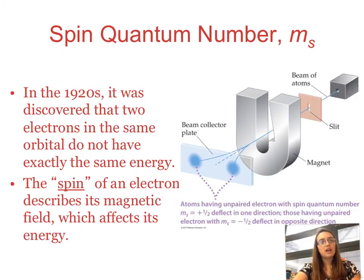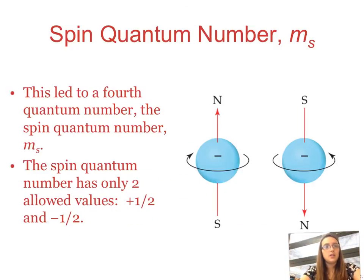So it was discovered that two electrons in the same orbital do not have exactly the same energy. So even though you have two electrons in the 2s, those two electrons have different energies. And that's because the spin of an electron actually affects its energy, which means we now have to take that into account.